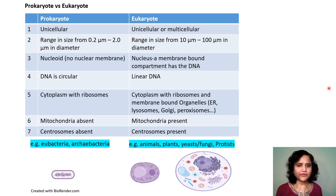Examples of eukaryotes are animals, plants, yeasts or fungi, and protists or protozoa.